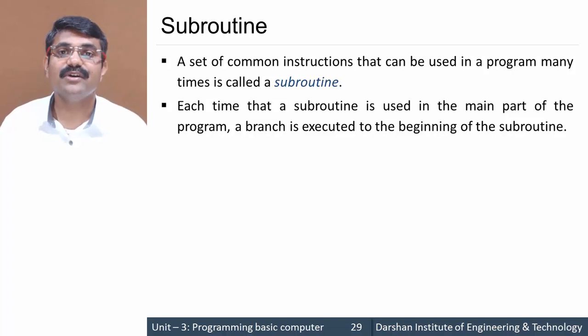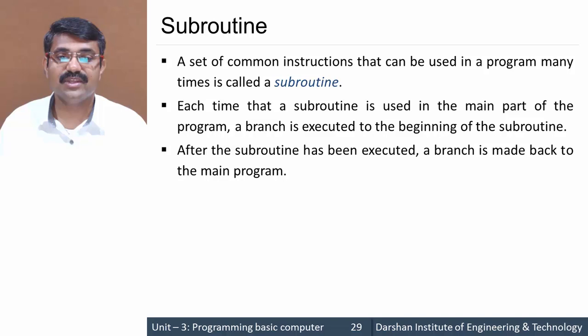These are called functions in C language and subroutines in assembly language. The difference is that a function can return a value but a subroutine cannot. Subroutines are pieces of code which can be executed many times in our primary program, and after execution, control returns to the main program.